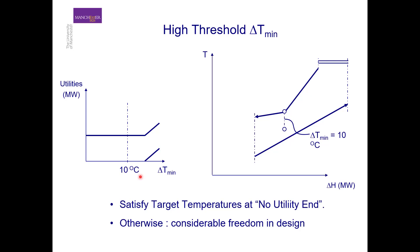The most difficult part of the design is the end of the process at the no-utility side. The cold utility is not present, meaning all the hot streams must be satisfied by the cold streams, because we don't have the option of rejecting heat from these streams to a cold utility. In contrast, on the other side of the process we have the hot utility, so some of the heat to the cold streams can be provided from the hot utility. The strategy is to satisfy temperatures at the no-hot-utility end first, then move toward higher temperatures where there is greater freedom in design due to the availability of the hot utility.